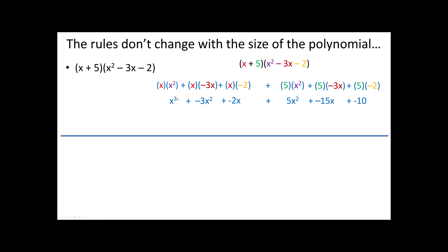Once we've reached this step, notice I've got a third degree term — a cubic term — a second degree or quadratic term, a linear term, another quadratic term, another linear term, and a constant term. I'm going to go through and combine the things that are alike. The commutative property says that as long as this is one long string of addition, I can rearrange it any way I want, and the associative property says I can regroup it however I want. So: there's my x cubed. Then I look at my x squareds — I have negative 3x squared and positive 5x squared, so negative 3 plus 5 gives me 2x squared. Then I combine negative 2x and negative 15x to get negative 17x, and then I've got that negative 10 on the end.